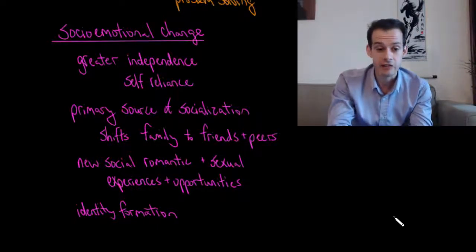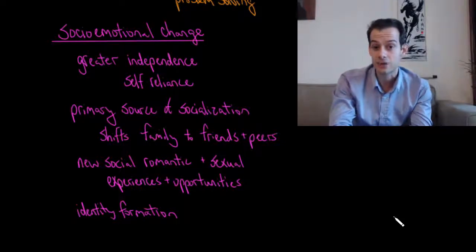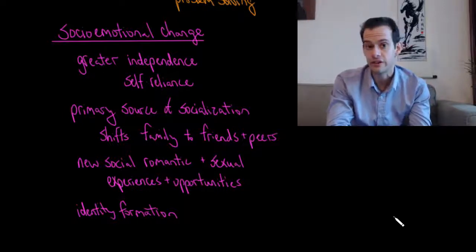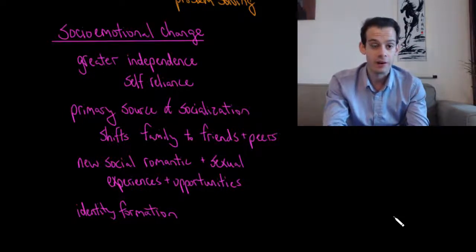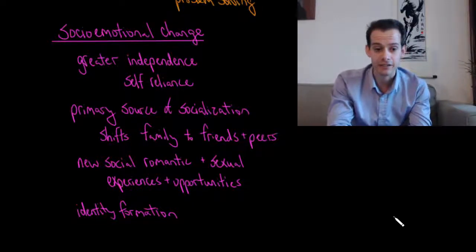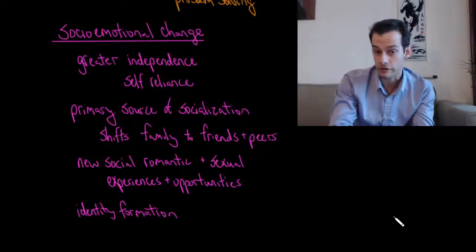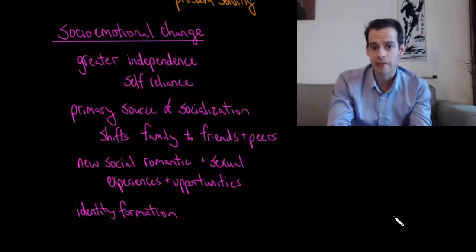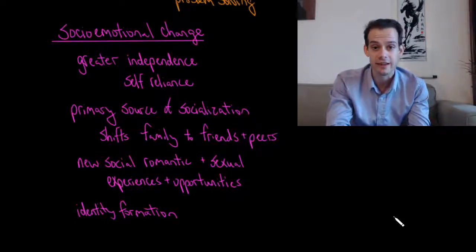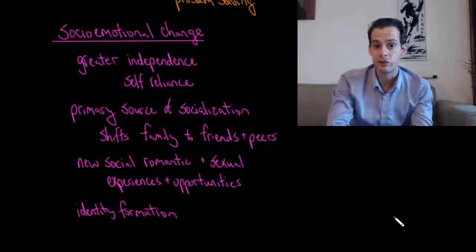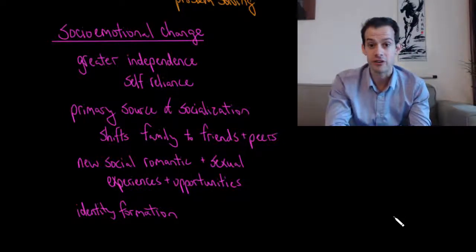This means that teenagers find they have new social, romantic, and sexual experiences and opportunities. They have to figure out how they fit into this new society that they're in. This is part of forming of their identity, which I mentioned in the video on Erik Erikson and his idea that the main challenge of adolescence was identity formation versus role confusion. This is a time where teenagers are trying to figure out how do I fit in, and one way they do this is they may try on different roles. They might think maybe I'm this kind of person, maybe I fit in with this group or maybe not. So they might see this sort of switching as they work to answer this question: who am I?